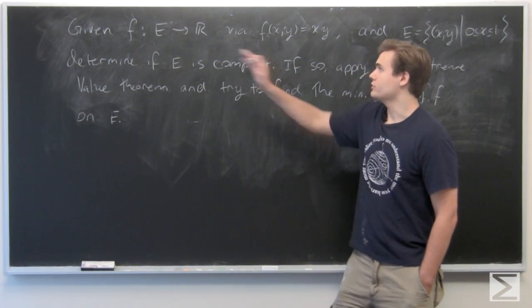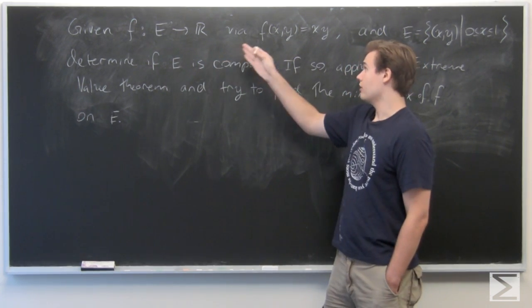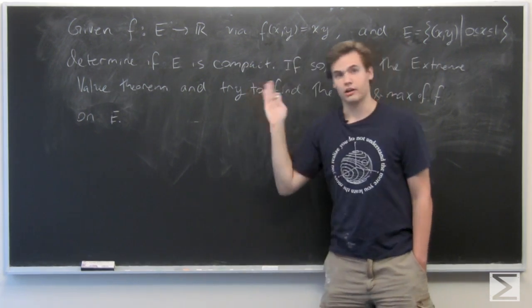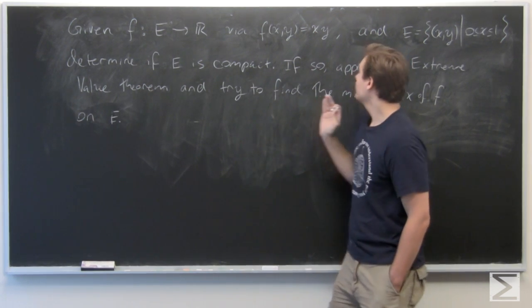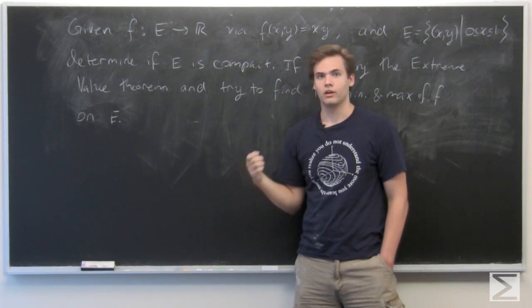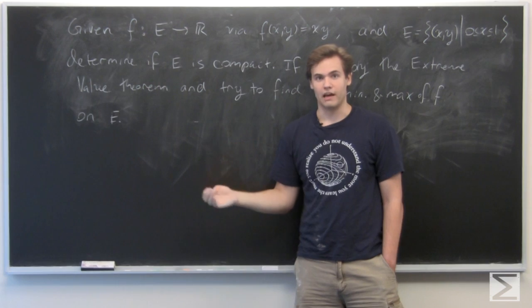In this problem, we're given a function f from some subset E of R² to R given by f(x,y) equals x times y. And we want to determine whether or not E is compact. And if it is, we can apply the extreme value theorem and try to find the maximum and minimum of f on E.